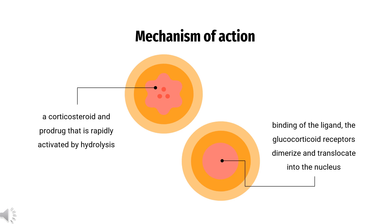How does beclomethasone work? Beclomethasone dipropionate is a corticosteroid and prodrug that is rapidly activated by hydrolysis to the active monoester 17-monopropionate (17-BMP), which mediates anti-inflammatory actions. 17-BMP has been shown in vitro to exhibit affinity for the human glucocorticoid receptor approximately 13 times that of dexamethasone and 25 times that of beclomethasone dipropionate. Upon binding of the ligand, the glucocorticoid receptors dimerize and translocate into the nucleus, where they subsequently bind to glucocorticoid response elements (GRE) on glucocorticoid-responsive genes, leading to changes in transcription.